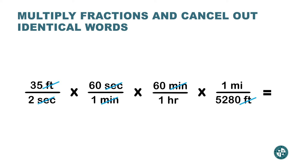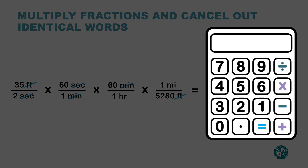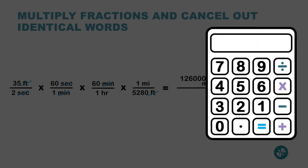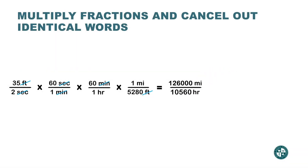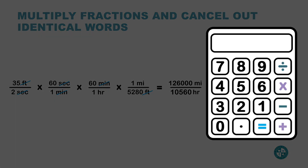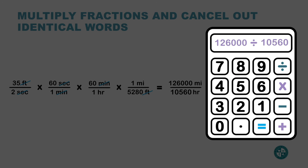Now we're going to multiply all the top numbers using the calculator: 35 times 60 times 60 gives 126,000. Then multiply the bottom: 2 times 5,280 gives 10,560. So I have 126,000 miles on top and 10,560 hours on the bottom. We do not leave the rate like this — we need to simplify.